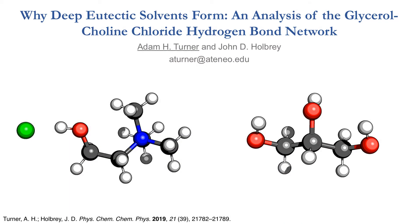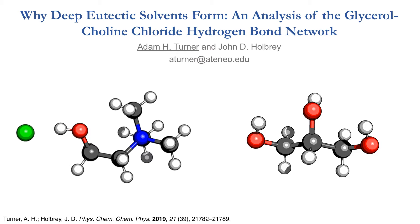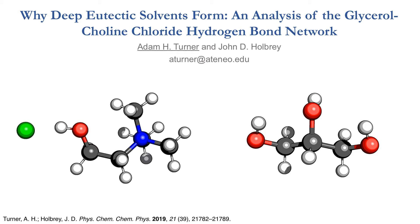In this work, the hydrogen bonding structure of the eutectic systems formed between the quaternary ammonium salt choline chloride and the hydrogen bond donor molecule glycerol was determined at the eutectic point — a 1 to 2 molar ratio of salt and glycerol — and at higher salt concentration of a 1 to 1 molar ratio.